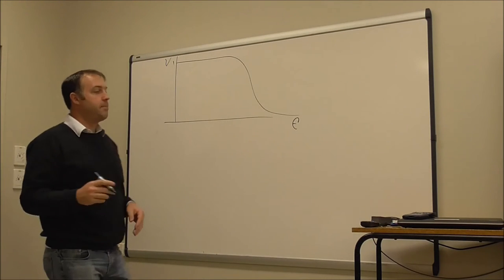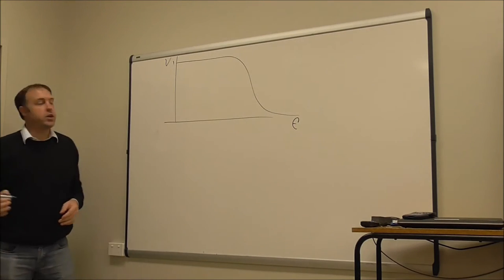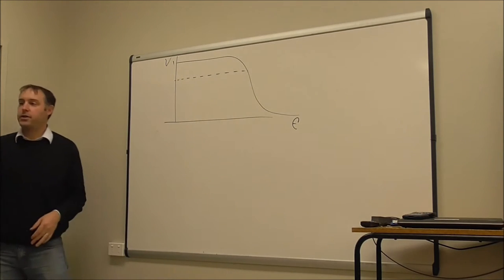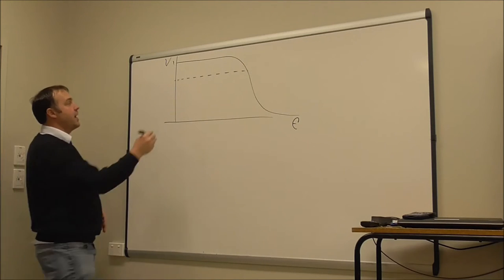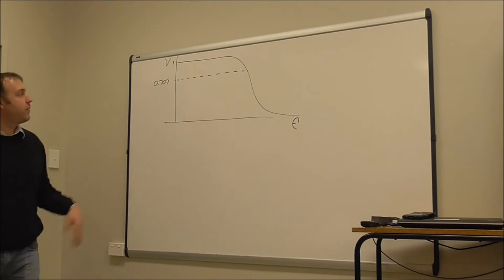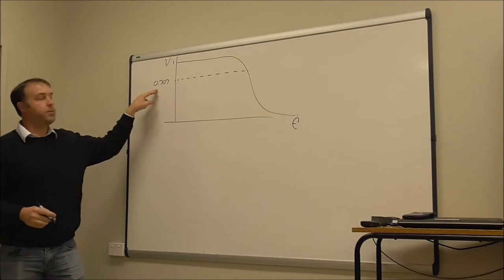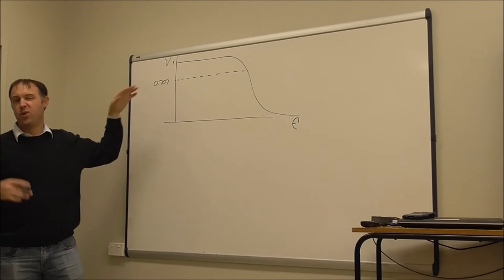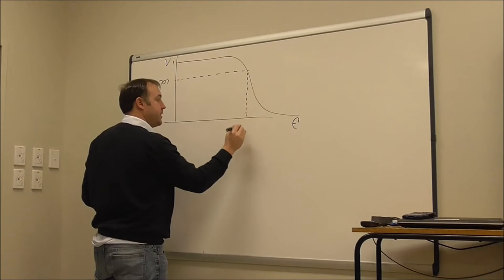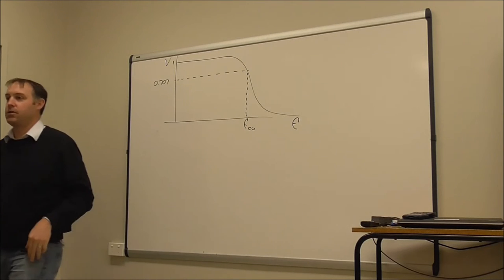In order to calculate what we call the cutoff frequency, we need to work out what the definition is. The definition of a cutoff is when the output voltage is 0.707 of the input voltage. So if we had one volt peak to peak on the input, at the cutoff frequency the output voltage would be 0.707 volts, or approximately 0.7 volts. That point on the graph would mark the cutoff frequency.